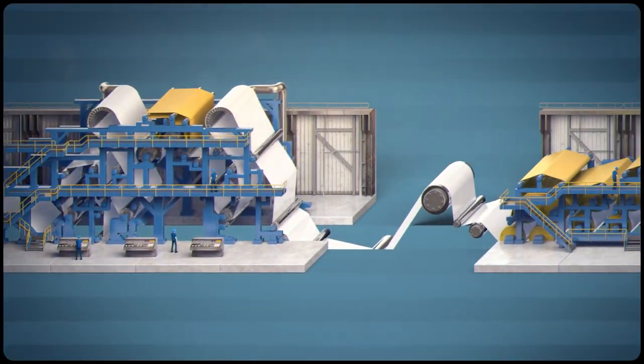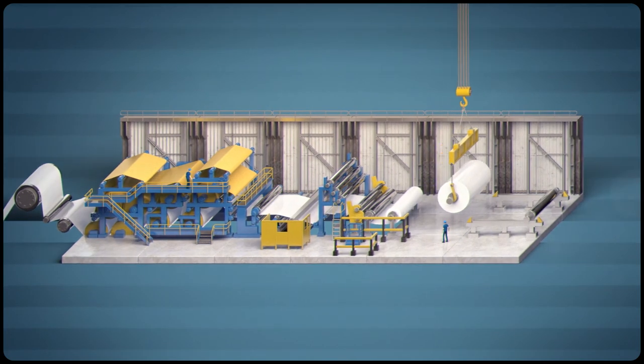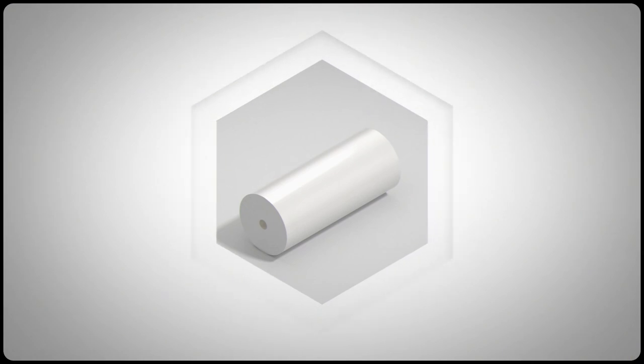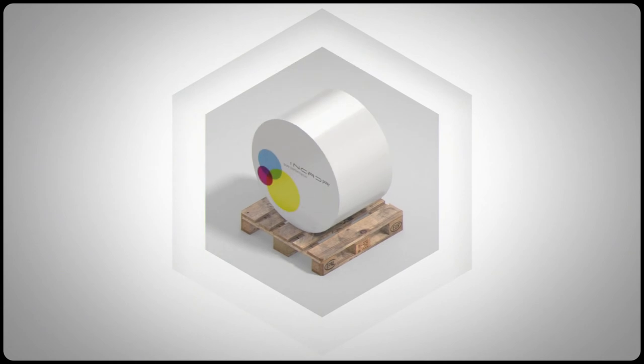The paperboard's then reeled onto a large steel core. The massive roll is then cut down into smaller reels. Some reels are wrapped for dispatch direct to customers. Others are sheeted into customer-specified sizes.